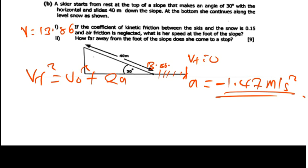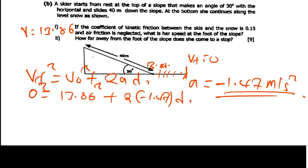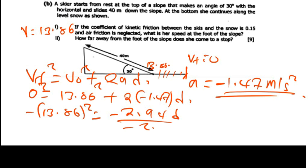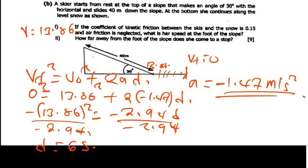Using the kinematic equation V_f² equals V_i² plus 2aD, with final velocity zero: 0 equals 13.86 squared plus 2 times negative 1.47 times D. Rearranging gives D equals 13.86 squared divided by 2.94, which equals approximately 65.34 meters. So she comes to a stop 65.34 meters from the foot of the slope.